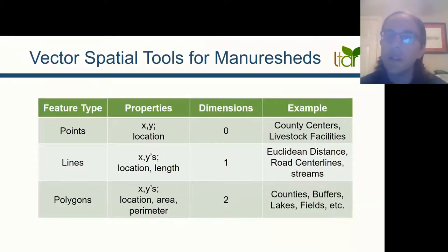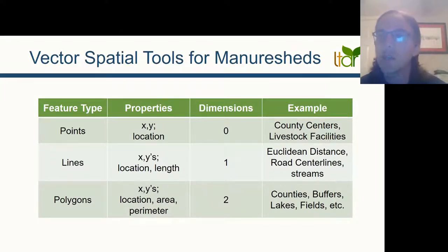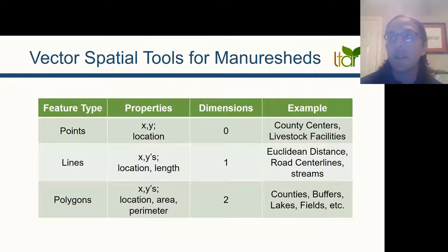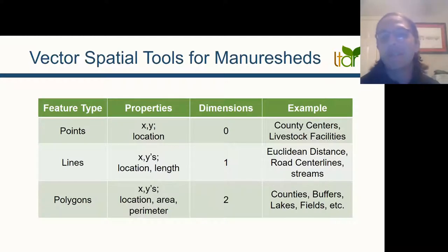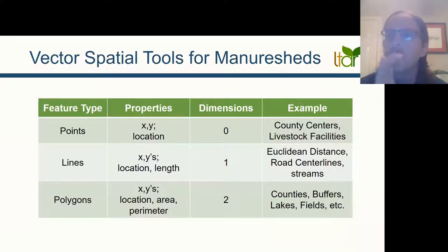For points, these are XY locations and we often use these to represent county centers or livestock facilities. For lines, you have multiple XY coordinates and we use this to represent Euclidean distance — the distance as the crow flies, the most direct distance — and also for road centerlines and streams in network analysis. Within polygons, we use polygons to represent things such as counties, buffers (a given distance around an object), lakes, and fields.